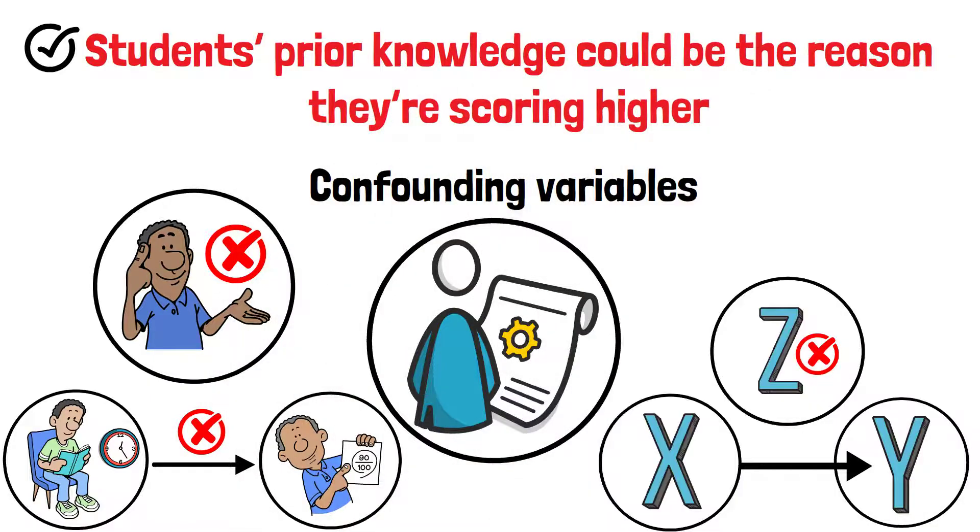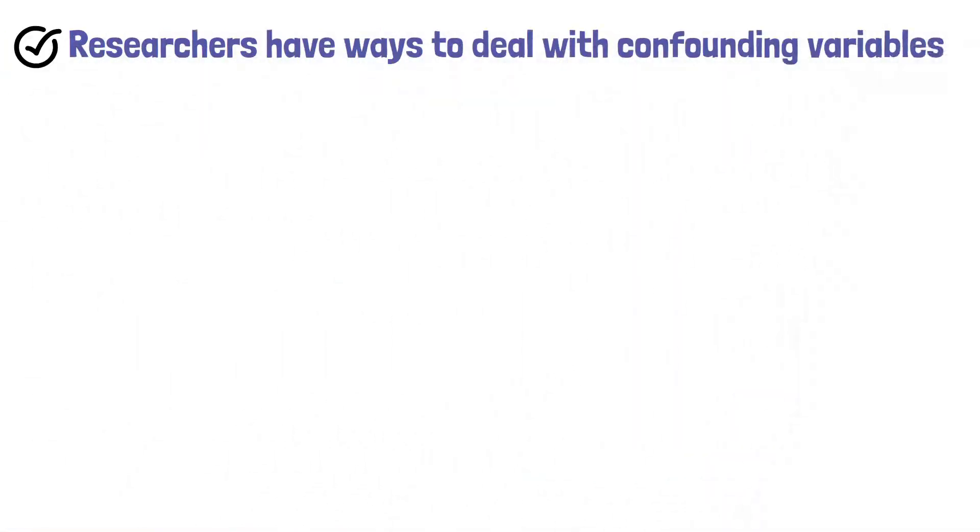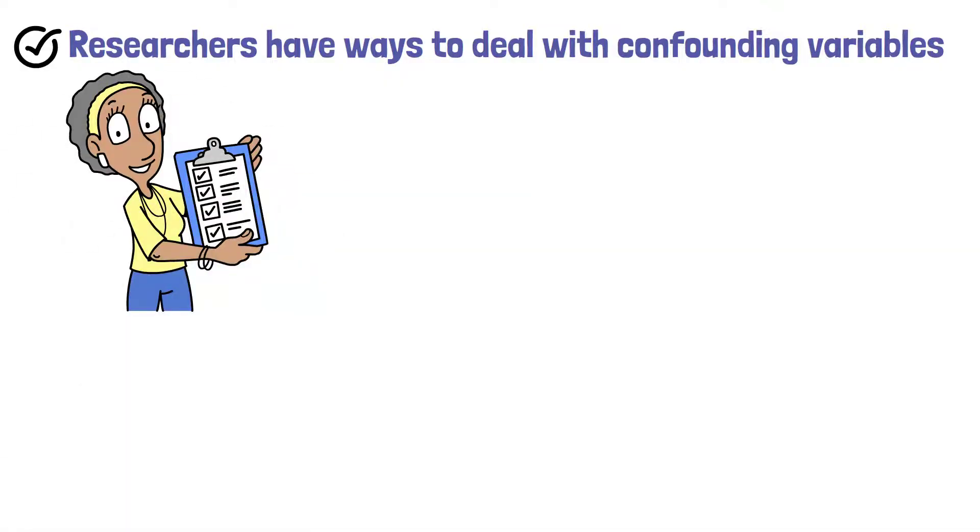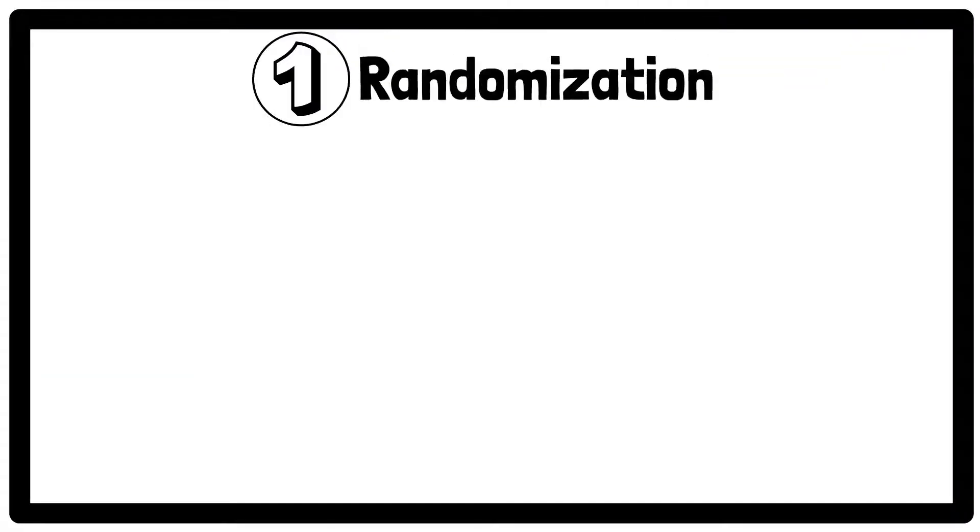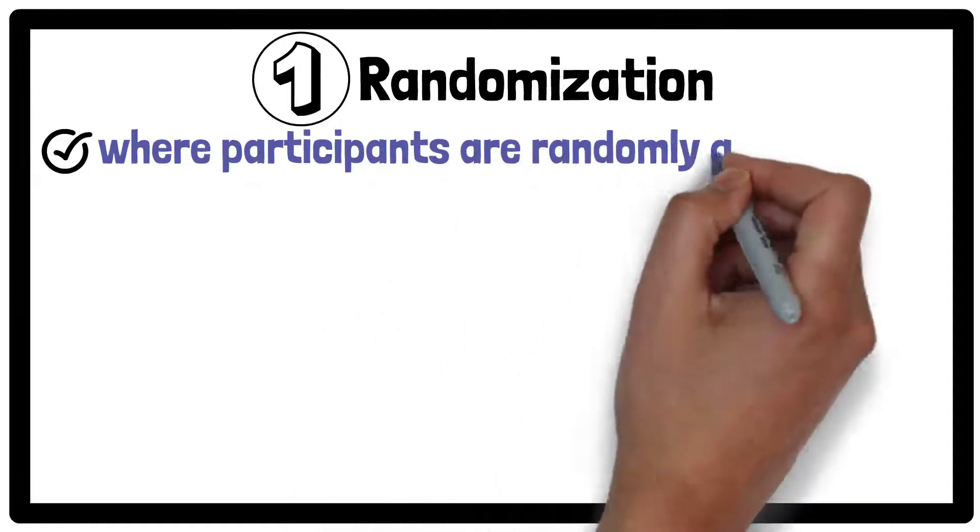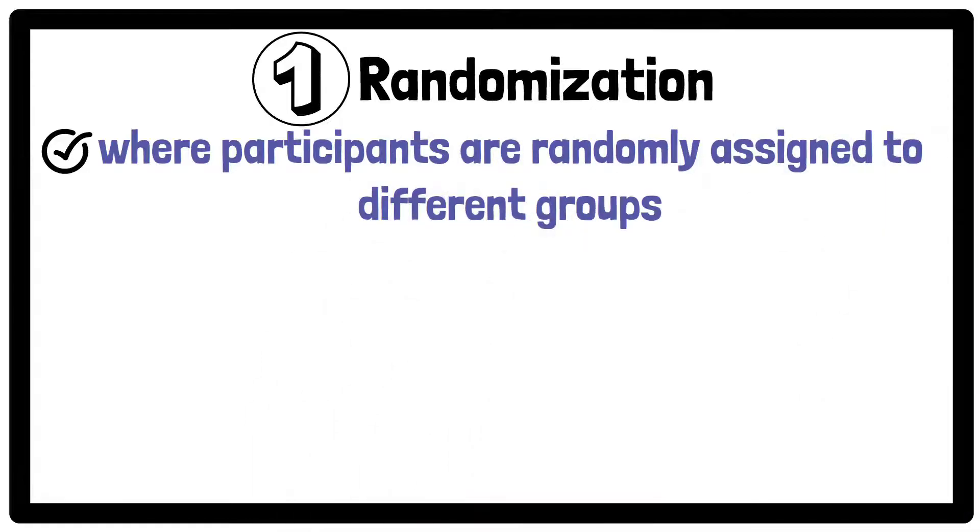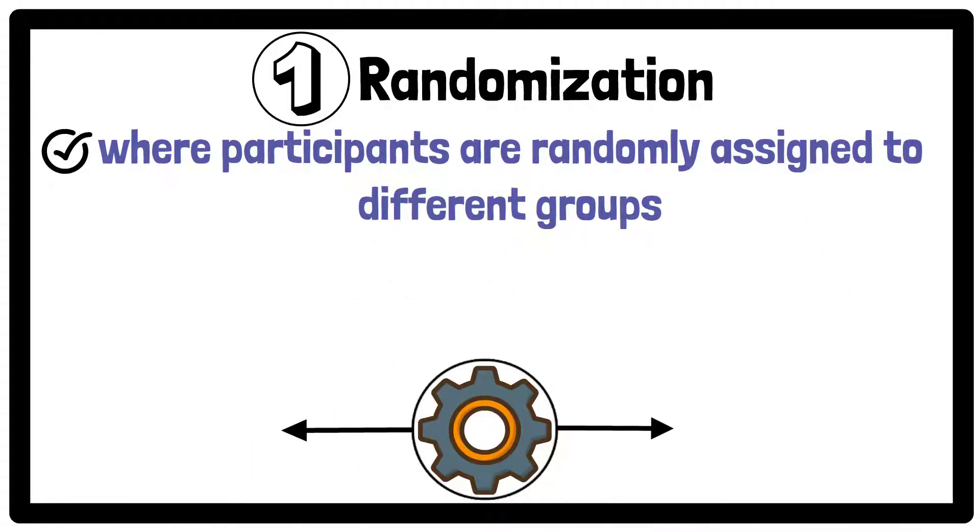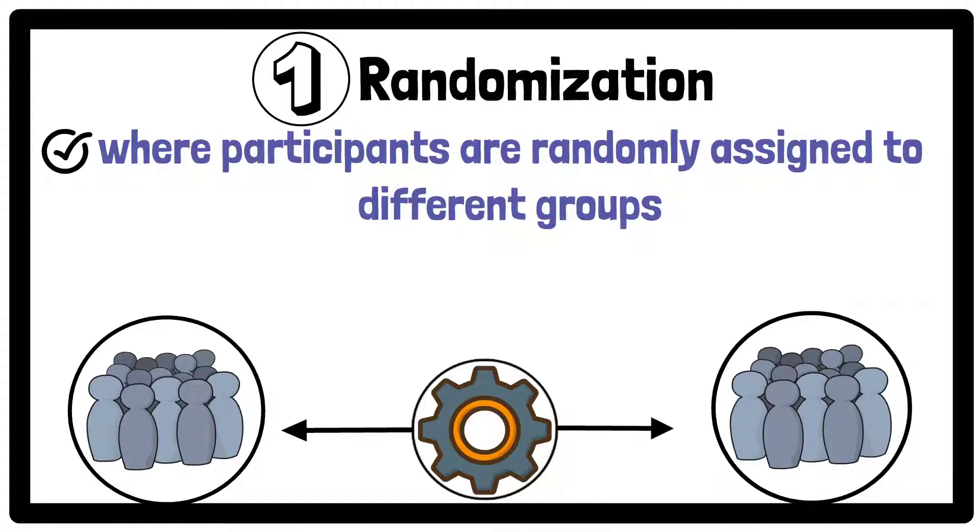Researchers have ways to deal with confounding variables to make their results more reliable. One way is by using randomization, where participants are randomly assigned to different groups. This helps spread out any confounding factors across groups evenly, so they don't disproportionately affect the results.